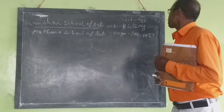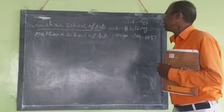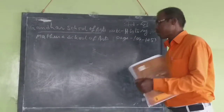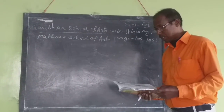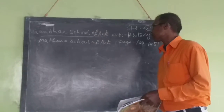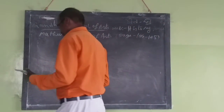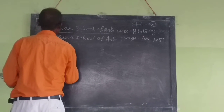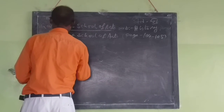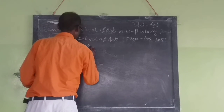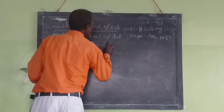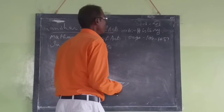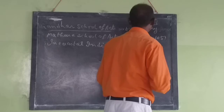This is the substandard 6 subject related to the Gandhara School of Earth, Mother School of Earth, and Postal India. In Postal India, COAS in Postal India, it is number 104 to 105.